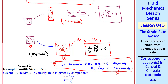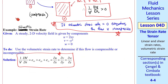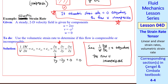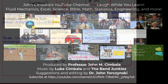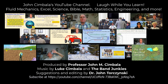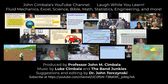For our simple velocity field, ∂u/∂x is 2y, ∂v/∂y is minus 2y, and ∂w/∂z is zero, which adds up to zero. Since the volumetric strain rate is zero everywhere, this flow is incompressible. Thank you for watching this video. Please subscribe to my YouTube channel for more videos.